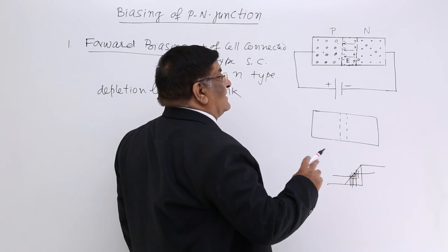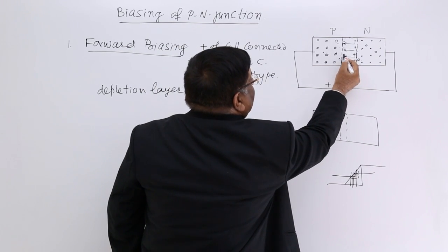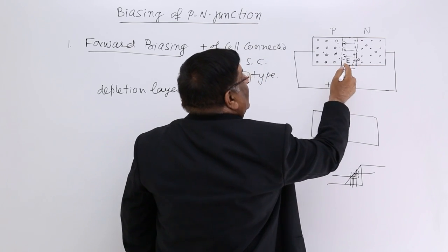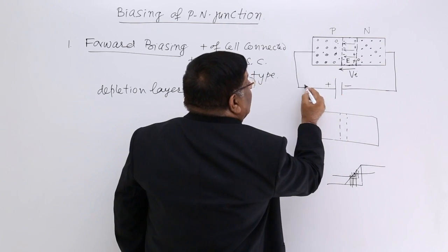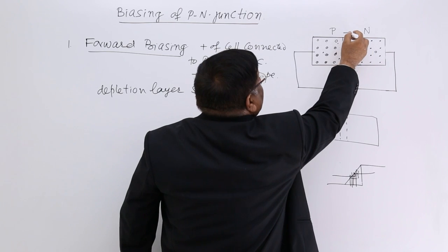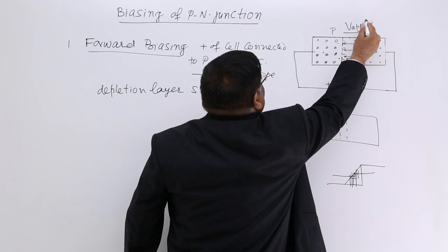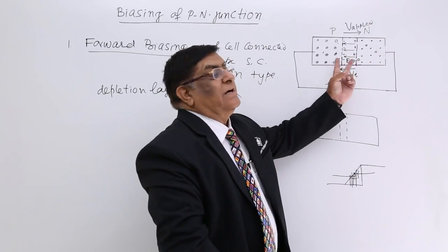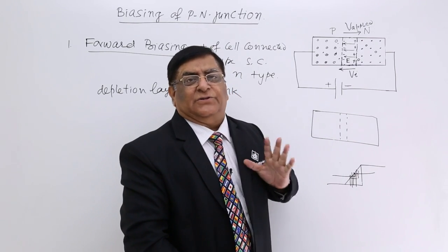You can understand it another way. The direction of the induced potential (V induced) is from plus to minus inside the junction. The applied potential (V applied) has plus on the P-side and minus on the N-side, so its direction is opposite to V induced. The resultant potential difference will be the algebraic sum of the two.